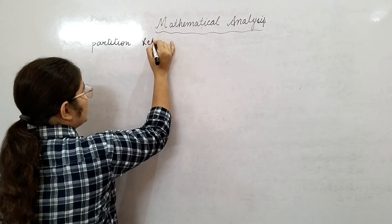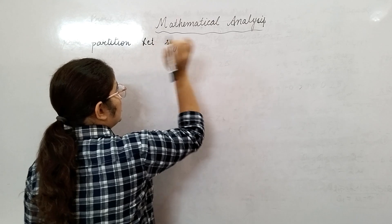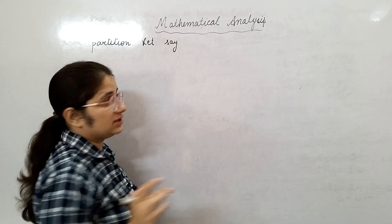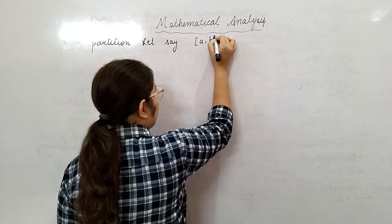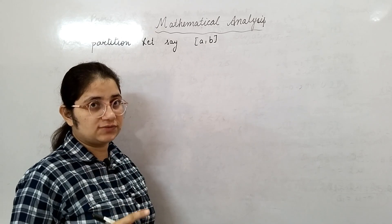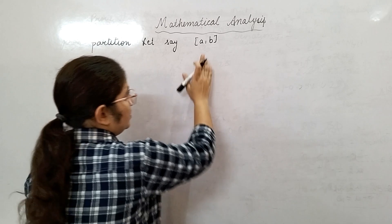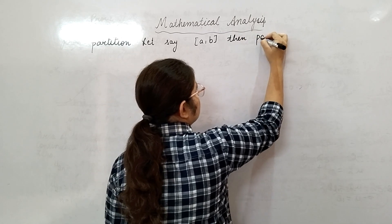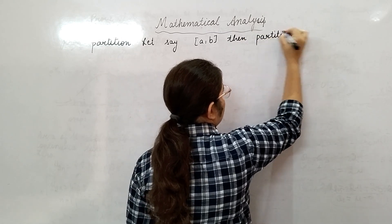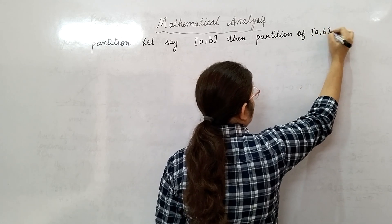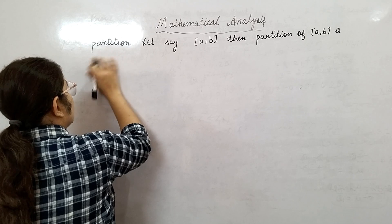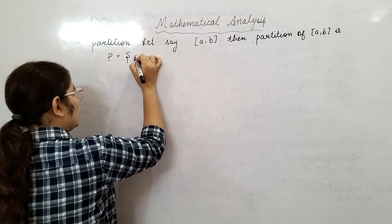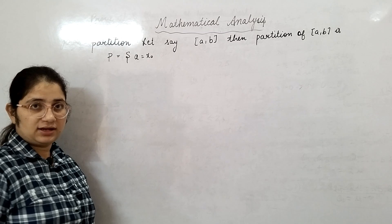Partitions: let's say your function is defined in any interval and we will do the partition of that interval. So let's say your interval is [a, b] and it is a closed interval always. So let this interval be closed interval [a, b]. Then partition of [a, b] is P = {a, x₁, x₂, ..., xₙ, b}.